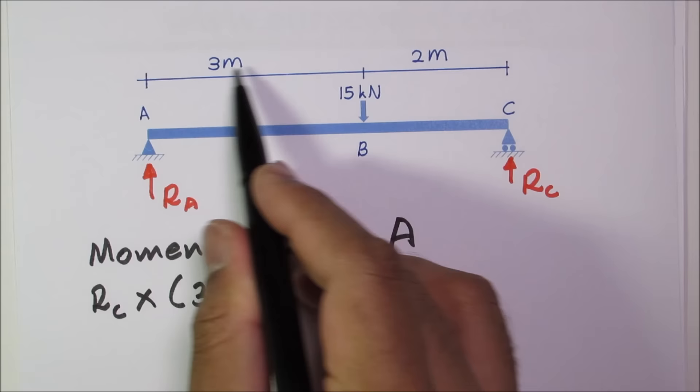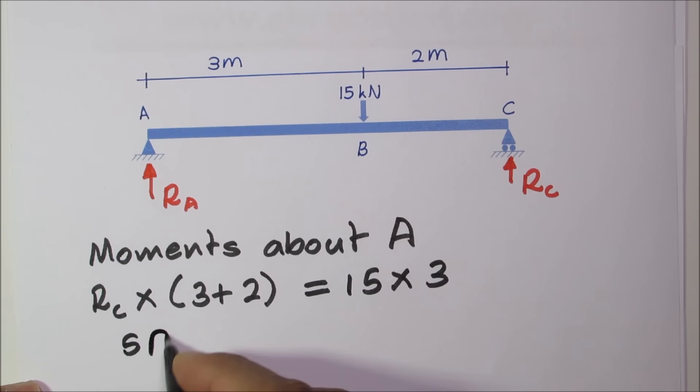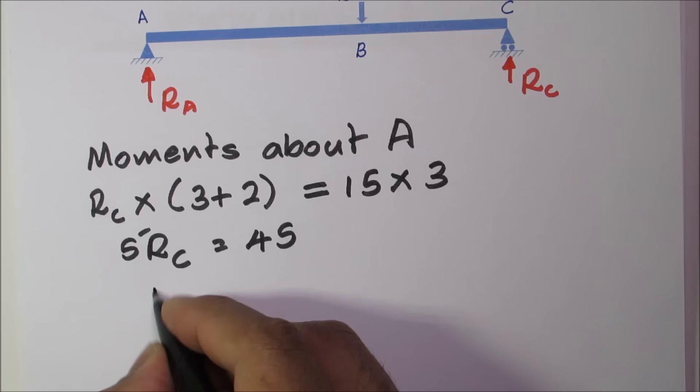You can write 5RC is equal to 45 and RC is equal to 9 kilonewtons.